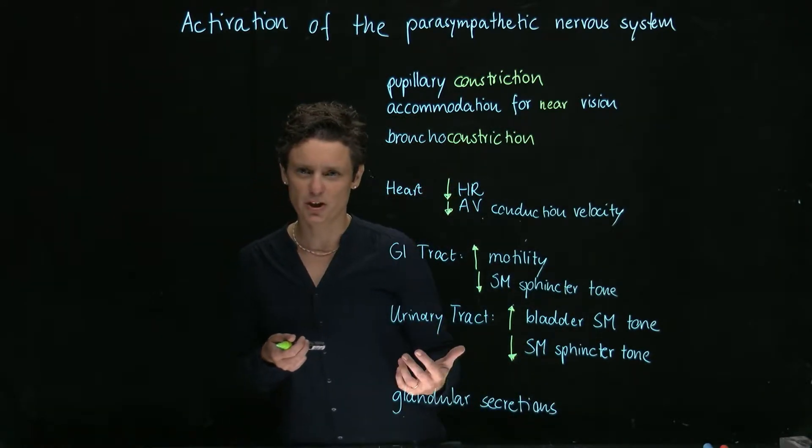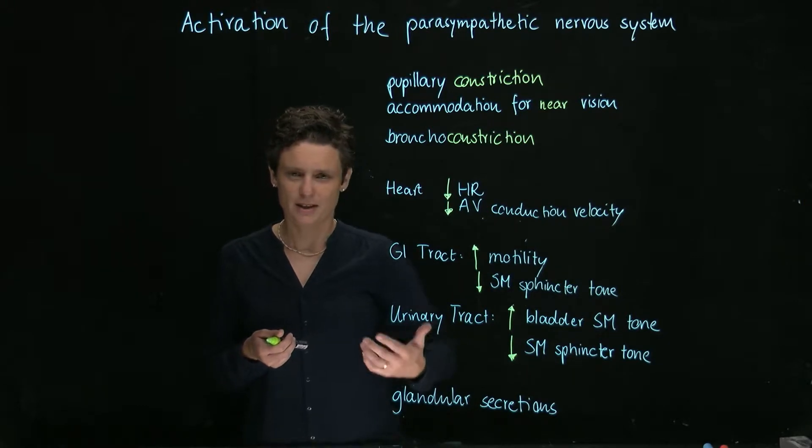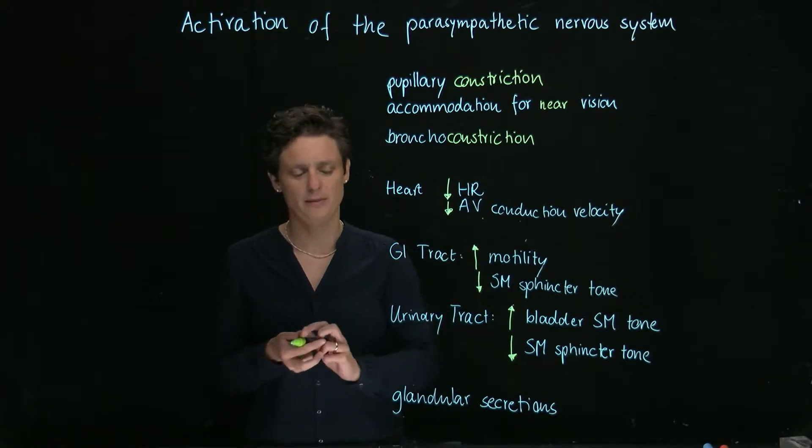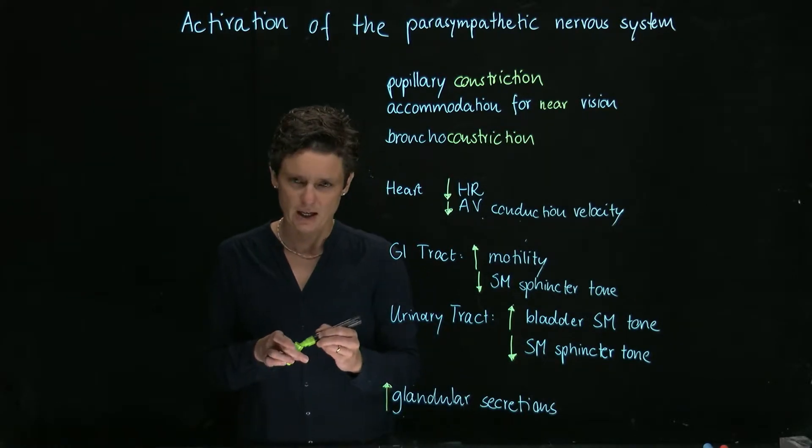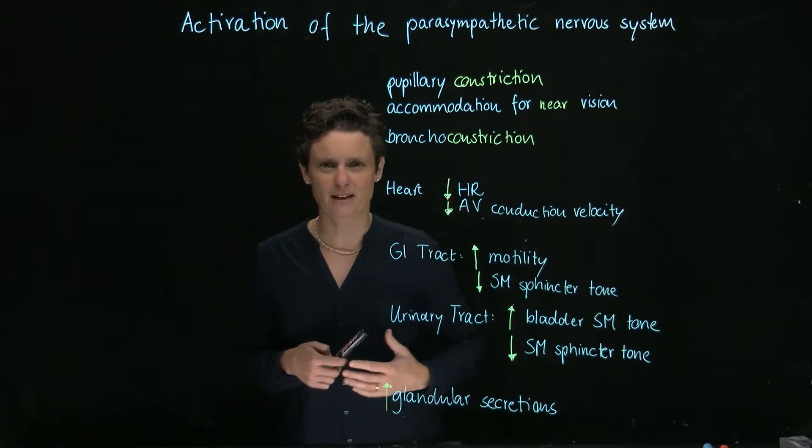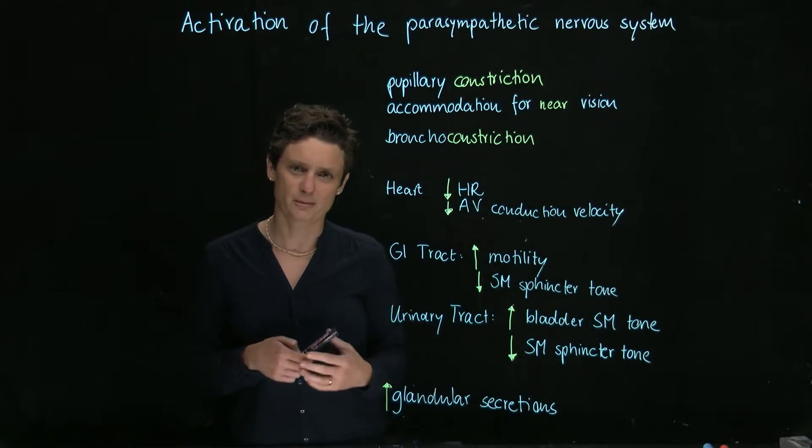All types of secretions are turned on. Things like salivation, lacrimation. So all types of glandular secretions are increased. These are the most important effects of the parasympathetic nervous system.